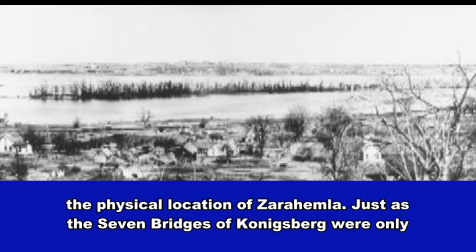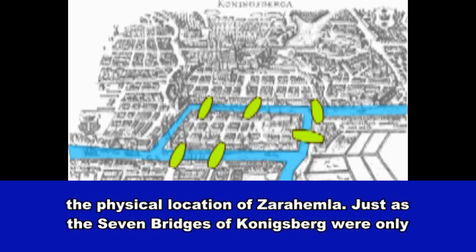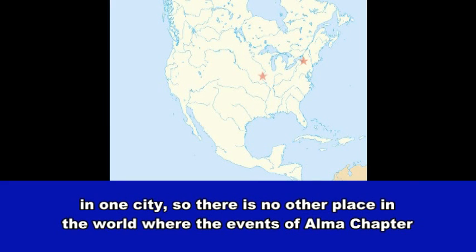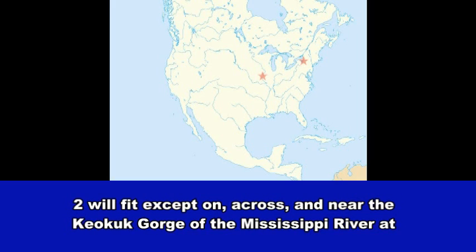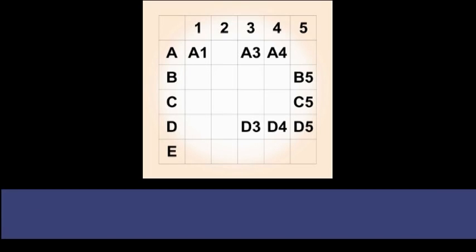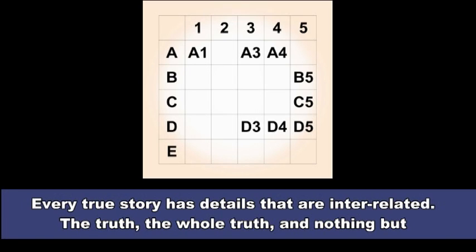Take another look at a video from last year and consider how the battle events confirm the physical location of Zarahemla. Just as the seven bridges of Koenigsberg were only in one city, so there is no other place in the world where the events of Alma Chapter 2 will fit except on, across, and near the Keokuk George of the Mississippi River at Montrose, Iowa.